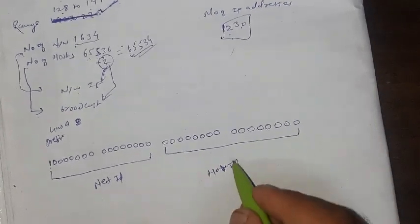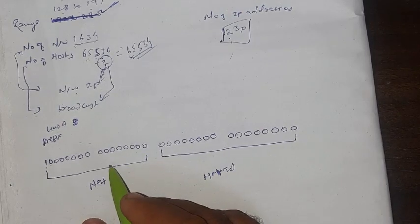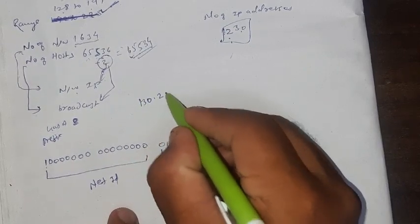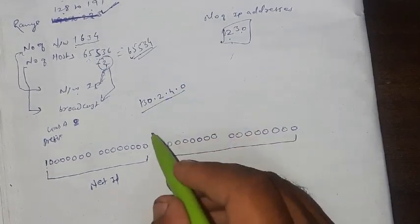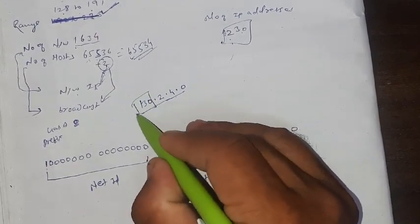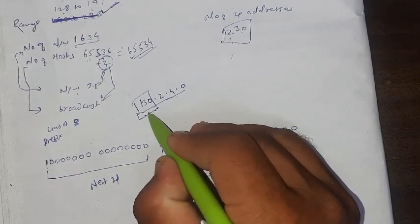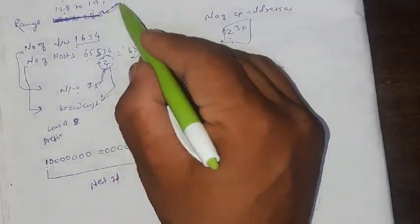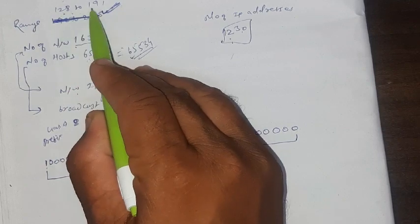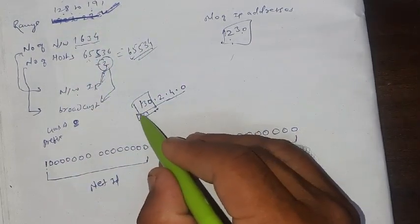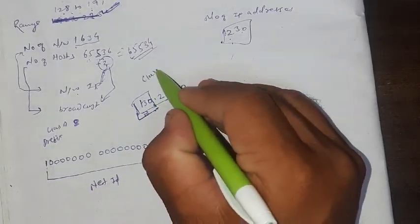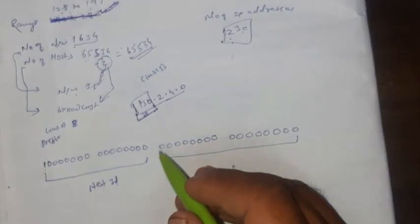But here, suppose if someone asks you, suppose I am giving you the example 130.2.4.0. This IP address belongs to which class? Then you don't see the rest of the octets, you just concentrate over the first octet and check if that number belongs to the range of given IP addresses. So here, 130 belongs to this range, and the range is what? 128 to 191. Then we can surely say here this IP address belongs to Class B IP address.